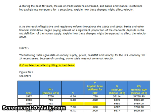The next question: as a result of legislative and regulatory reforms in the 80s and 90s, banks and other financial institutions began paying interest on a significant proportion of checkable deposits in the M1 definition of money supply — basically, banks started offering interest on checking accounts. How might this affect the velocity of money? In this case, V would actually decrease. If a bank offers interest on the balance in our checking account, it benefits us to save rather than spend, and if we save more money, V slows down.